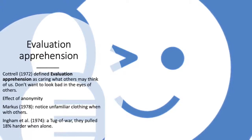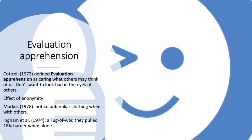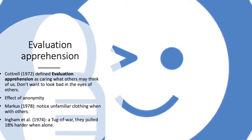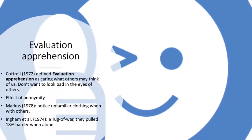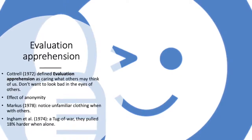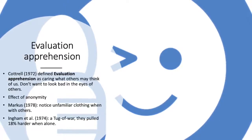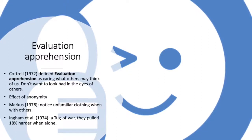Marcus in 1978 stated that individuals told to wear familiar or unfamiliar clothing in an experiment — while either being alone, with a repairman, or with an attractive person — had faster reaction times when wearing familiar clothes and slower reaction times when wearing unfamiliar clothing with others.